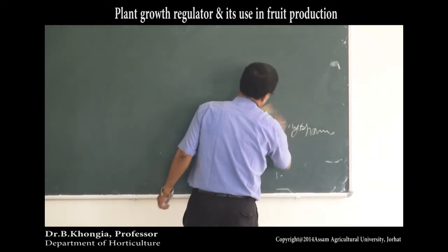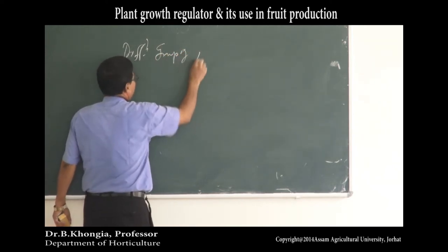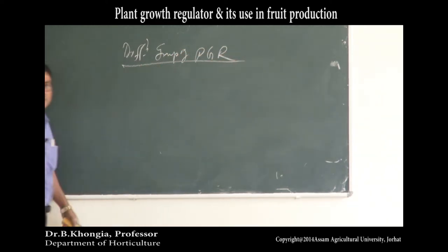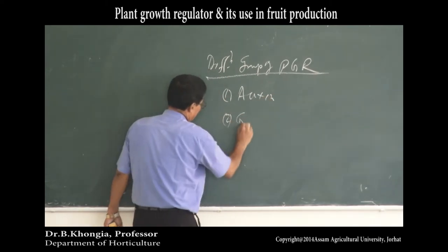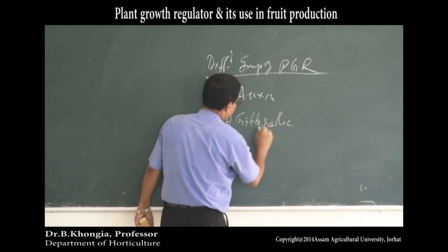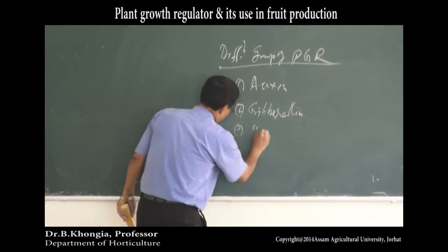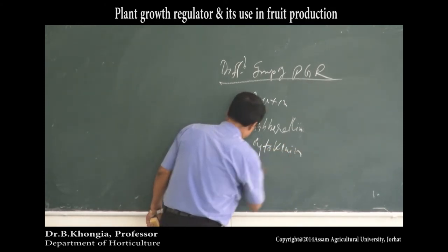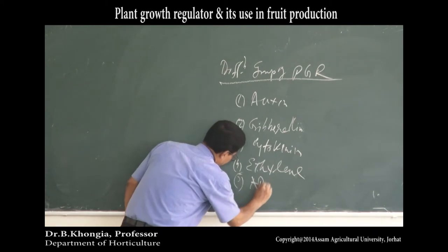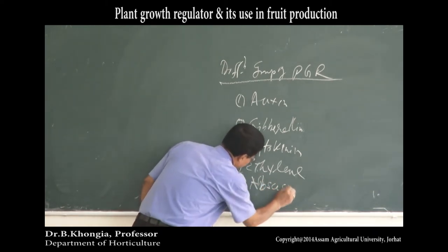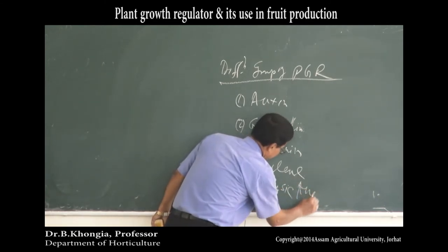There are different types of plant growth regulators (PGR): first is auxin, second is gibberellin (G-I-B-B-E-R-E-L-L-I-N), third is cytokinin, fourth is ethylene, and fifth is abscisic acid (A-B-S-C-I-S-I-C acid), written in short form as ABA. During winter, leaves are dropped to prevent transpiration loss, and abscisic acid is involved in leaf fall or abscission.